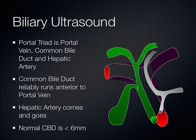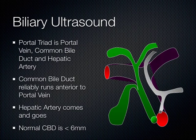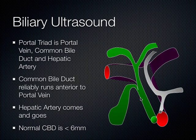Once you master the gallbladder, you can move on to the biliary tree. You've got the portal triad, which is the portal vein, the common bile duct, and the hepatic artery. The portal vein and common bile duct run really parallel to one another, whereas the hepatic artery kind of meanders along. The common bile duct is very reliably anterior to the portal vein and should be less than 6 millimeters along its length. CBD — common bile duct — is an abbreviation I constantly use.